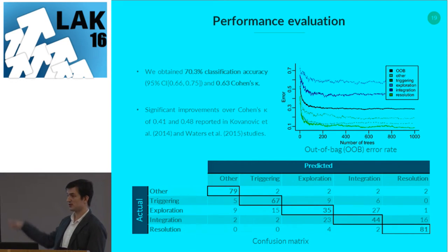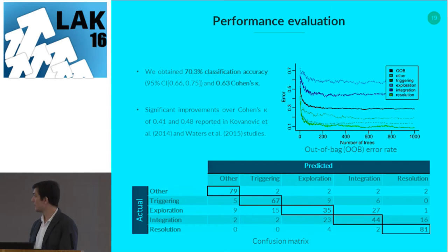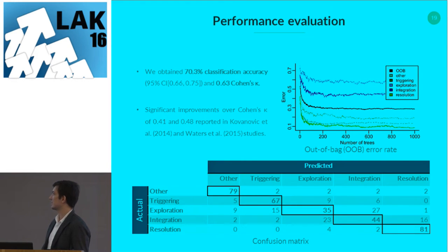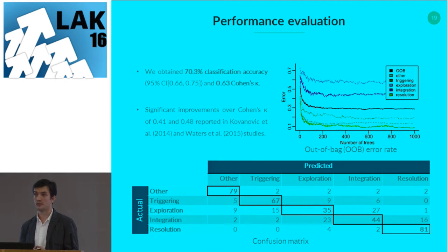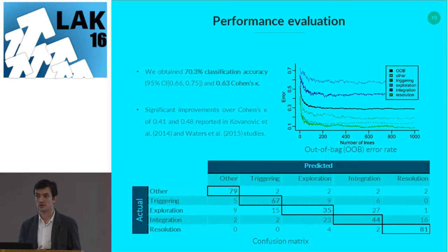Looking at the confusion matrix, the correct classifications are on the diagonal. There are some problems in particular related to the integration phase — it's more often predicted as exploration phase (23 misclassifications) — and resolution predicted as integration (27 misclassifications). The confusion is mainly between those two phases. The reason is that in the coding scheme, when a student both explores and then synthesizes, the message is coded as synthesis. So textually, the first chunk of the message was actually exploration, making it hard to classify.